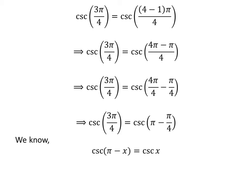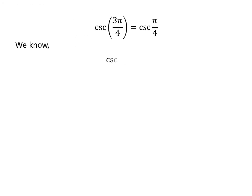We know the famous trigonometry identity: cosecant of pi minus x is equal to cosecant of x. The proof of the identity has been explained in the video appearing in the upper right corner, and the link is also given in the description. Applying this identity gives us cosecant of 3 times pi upon 4 is equal to cosecant of pi upon 4. We know cosecant of pi upon 4 is equal to square root of 2, so cosecant of 3 times pi upon 4 is equal to square root of 2.